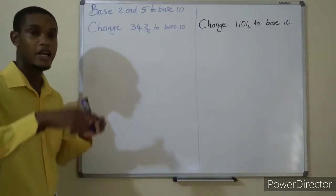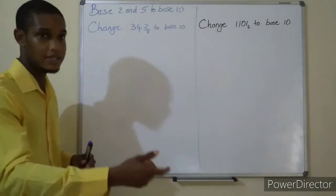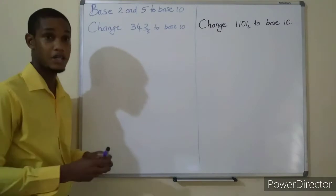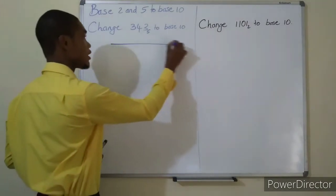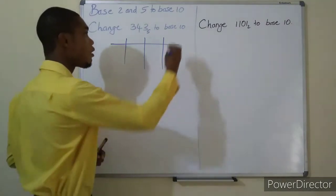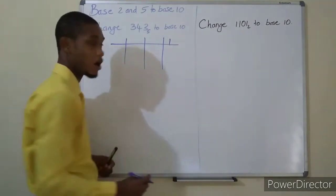Whatever base you are in and converting to base 10, you create that base table. So you're in base 5 and you're going to create a base 5 table. You can always create your columns first. The first column always has the number one.